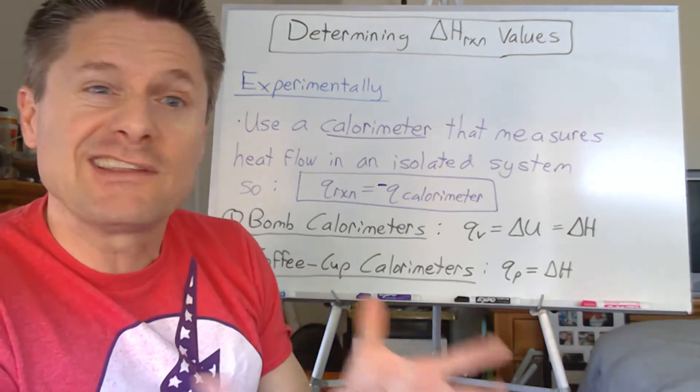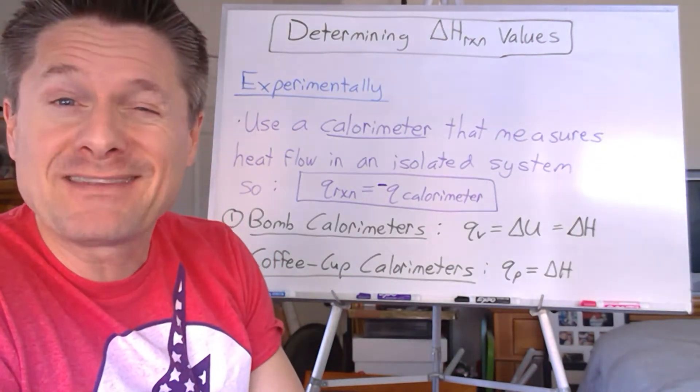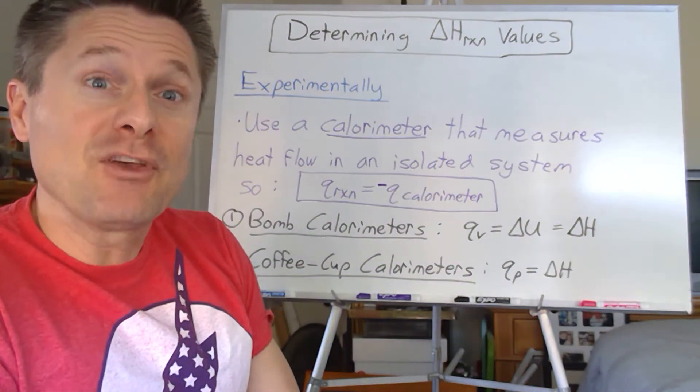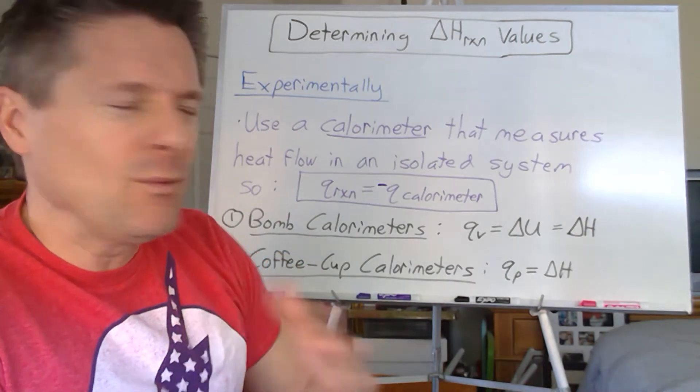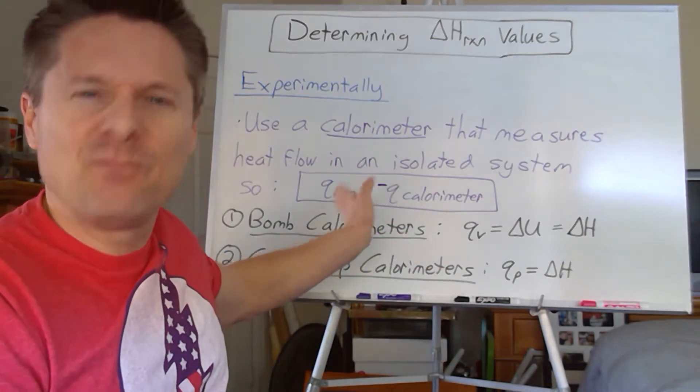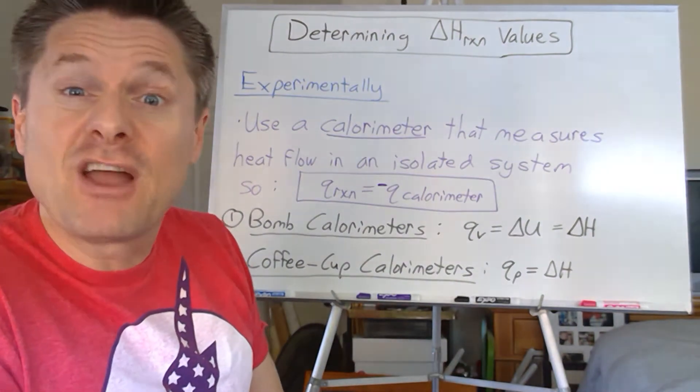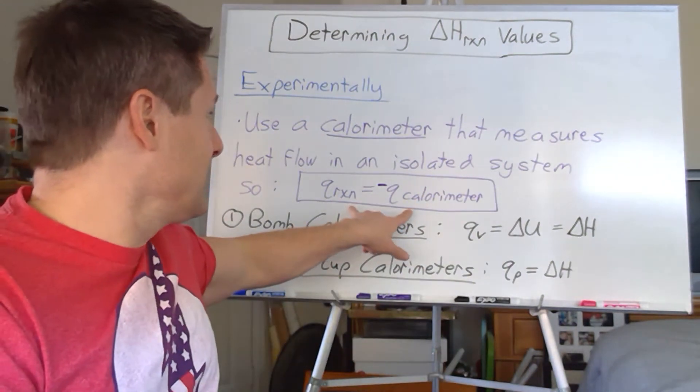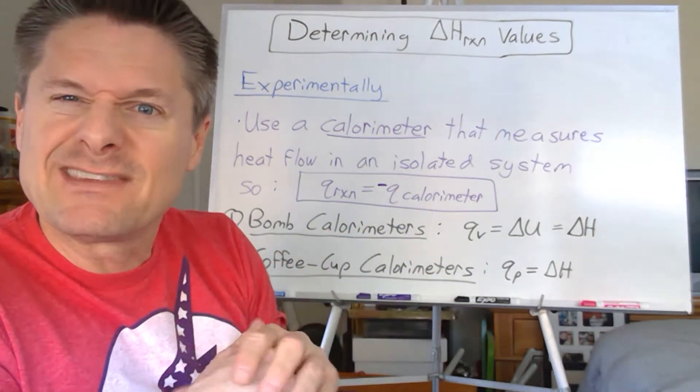If we have an isolated system, which is what a calorimeter is - usually it's Styrofoam at undergraduate levels, maybe something a little more fancy pants if you're at higher levels - that heat can't flow between the system and the surroundings. Commonly we just kind of define system and surroundings in an off-the-cuff kind of way, but realistically because the calorimeter is isolated, we'll look at this in detail later when we look at these different types of calorimeters.